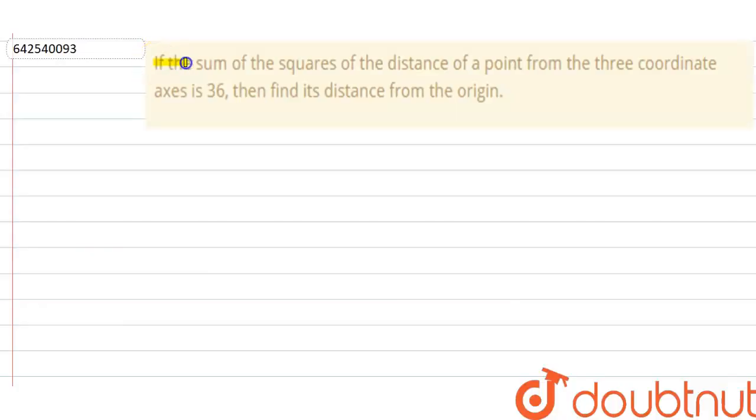Hello everyone, so our question is: if the sum of the squares of the distance of a point from three coordinate axes is 36, then find its distance from origin.